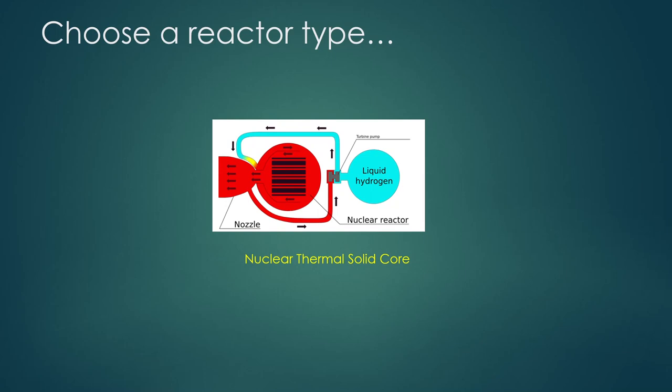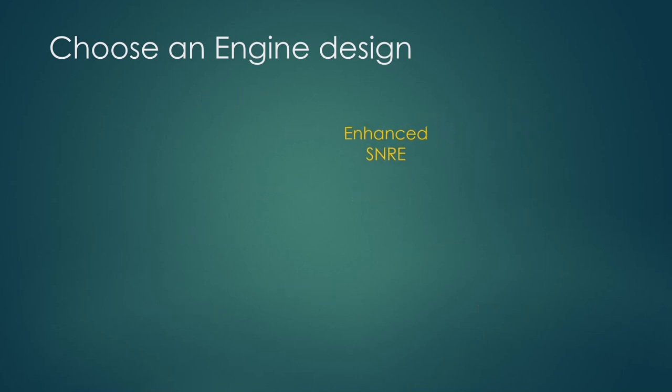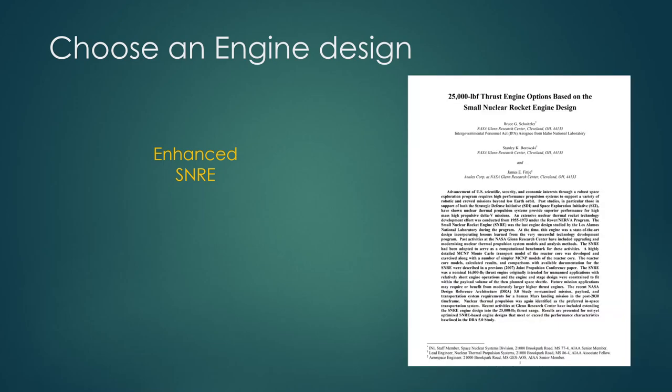So if we're going to do nuclear thermal solid core, now we need to choose an engine design. And while there are a lot of different choices here, some have been built, some haven't. But for this one, I'm going to choose a design called enhanced SNRE. The reason I've chosen it is this is a pretty popular choice amongst nuclear rocket enthusiasts, and it also comes with a manual. So there's this manual you can use that will really help you a lot in the construction of this nuclear thermal rocket.